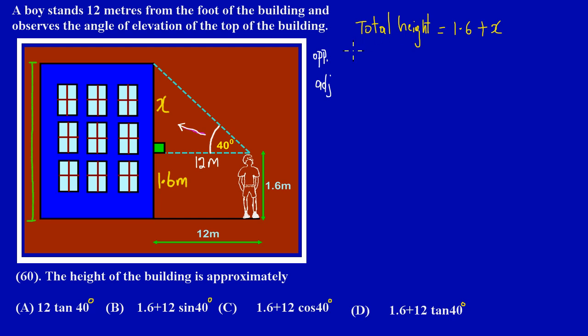So we can say tan of theta is equal to the opposite over the adjacent. Now simply we can just substitute quickly. We have the angle theta, they gave us that.